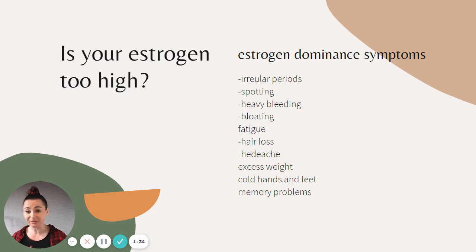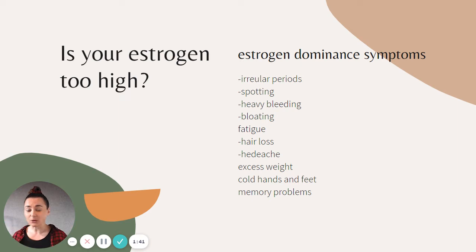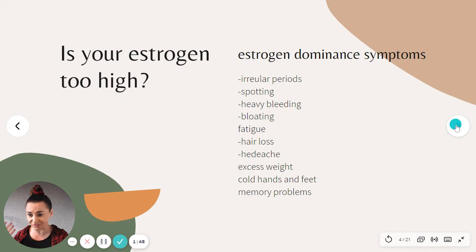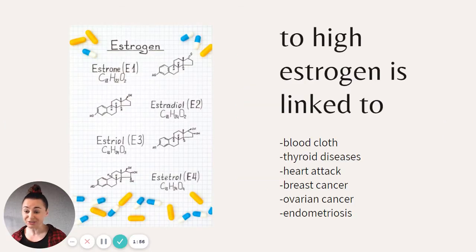All of these are symptoms of endometriosis that we all experience — heavy bleeding, spotting between periods, irregular periods, bloating, fatigue, hair loss, excess weight, and that brain fog feeling. All of these are symptoms of excess estrogen. Too high estrogen is not only linked to endometriosis.